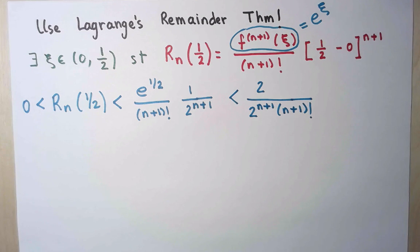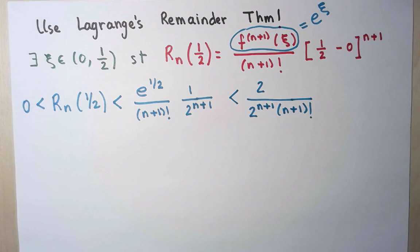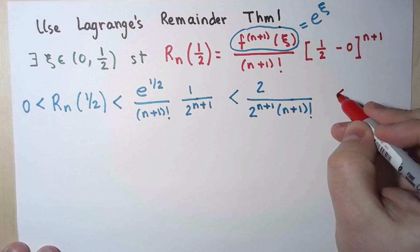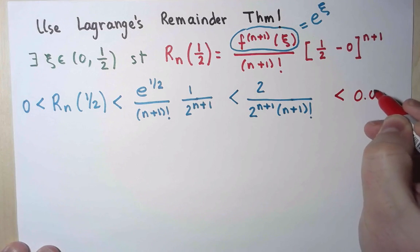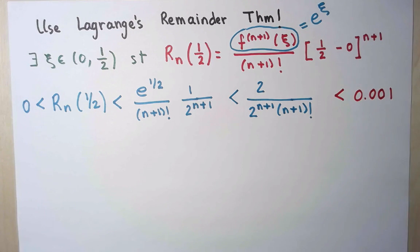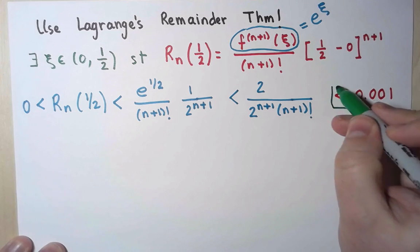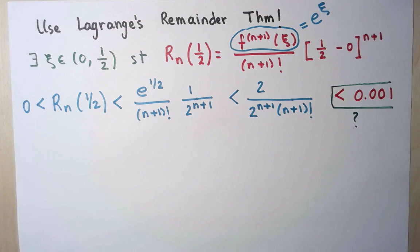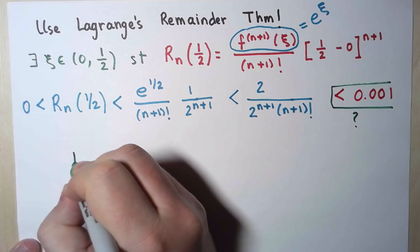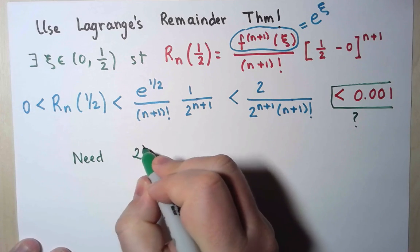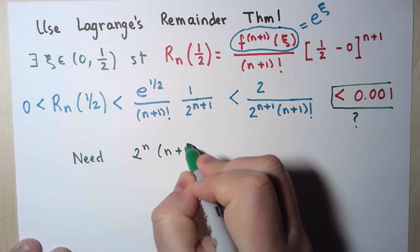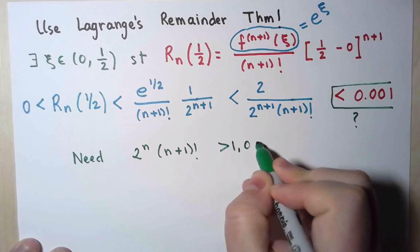And now, I have bounded the error by this quantity that depends on n, and what I would like to say is that this is less than 0.001. This is what I want, how to make that less than 0.001. Or equivalently, what I need is to say that 2 to the n times n plus 1 factorial must be greater than 1,000.